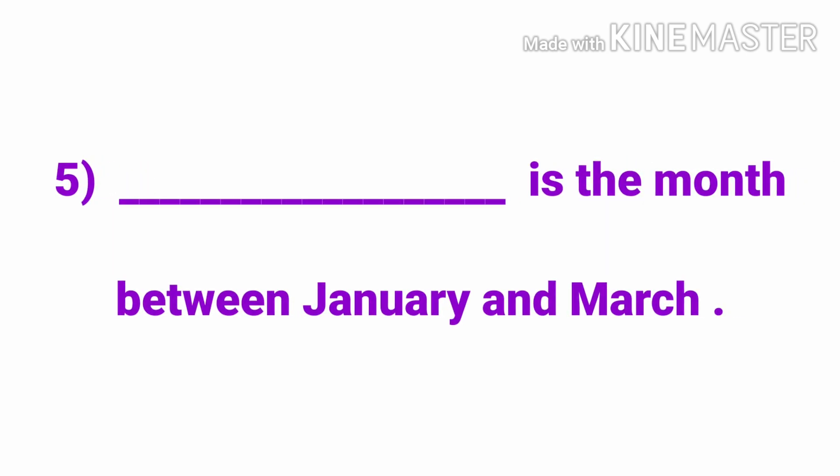Number five: dash is the month between January and March.